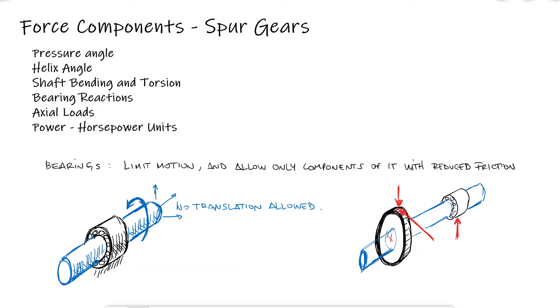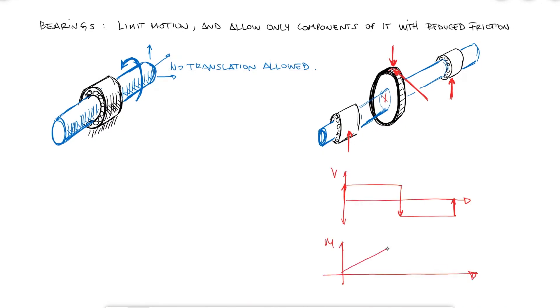We'll study bearings in more detail in a few videos from now, but for now we are only interested in being able to calculate the bearing reactions. This is important because with them we will be able to make selections of appropriate bearings, but also because these reactions from the bearing to the shaft, together with the interaction of the gears, is what causes the shaft to be subjected to bending for our shaft fatigue design calculations.